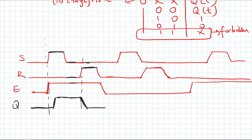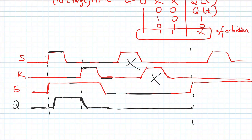Q stays at zero, and at this point the enable goes to zero, which means I cannot change my output. I don't care about S or R because my enable signal is low. Then at this point my enable becomes high again, but S and R are both zero so I keep Q until S becomes one. At that point S=1, R=0, so Q will become one and continues after that.